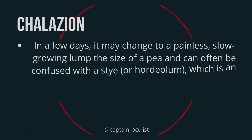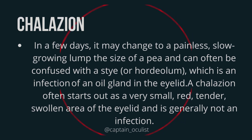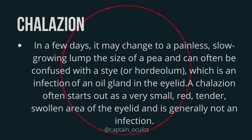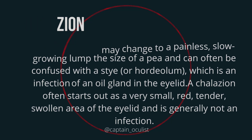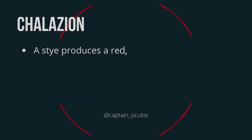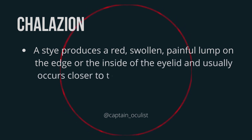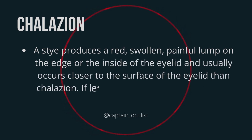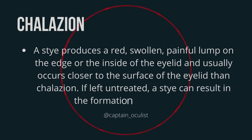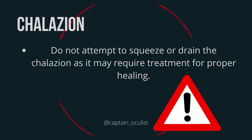In a few days, it may change to a painless, slow-growing lump the size of a pea, and can often be confused with a stye, or hordeolum, which is an infection of an oil gland in the eyelid. A stye produces a red, swollen, painful lump on the edge or inside of the eyelid and usually occurs closer to the surface of the eyelid than a chalazion. If left untreated, a stye can result in the formation of a chalazion.